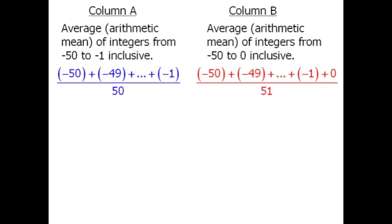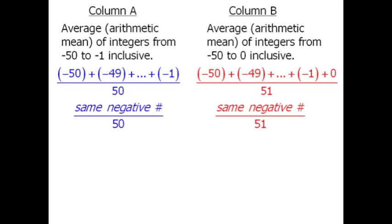We should recognize here that both numerators are virtually identical — these two parts are exactly the same. The only difference is that in column B, we're adding 0. Adding 0 does not affect the sum, so we know that both numerators are the exact same negative number.